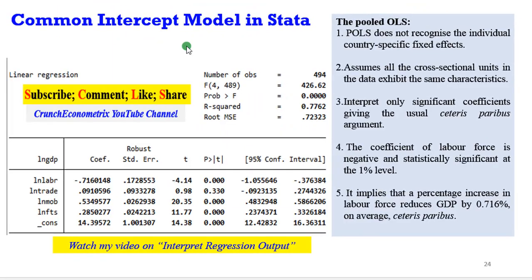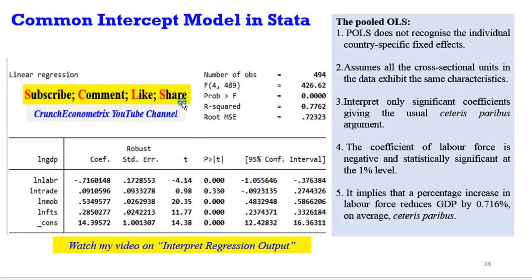Let's go now to PowerPoint. For the common intercept model, from the result I showed you in Stata, you will observe that the pooled OLS does not recognize that the countries are different. It has applied just one common constant to all of them. It assumes that all the units exhibit the same features.